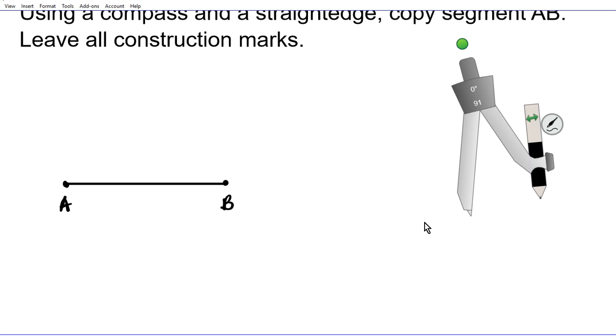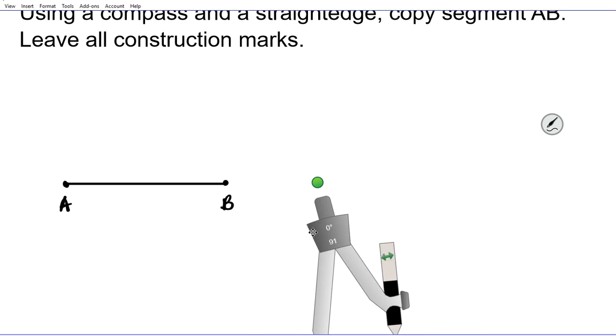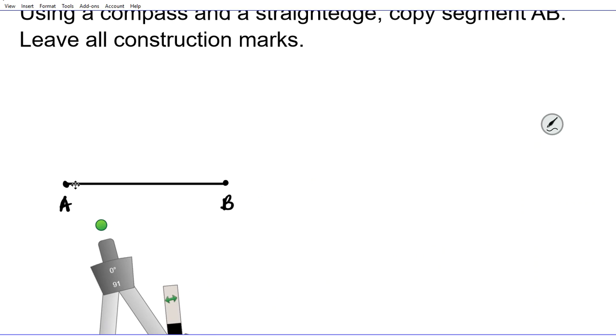Now the first thing we're going to do is create our starting point. Okay, so we have point A right here. We're just going to copy our point A. Just make a point where you want to start your creation of the copy of segment AB. So let's put a point here and then we can call that A prime.